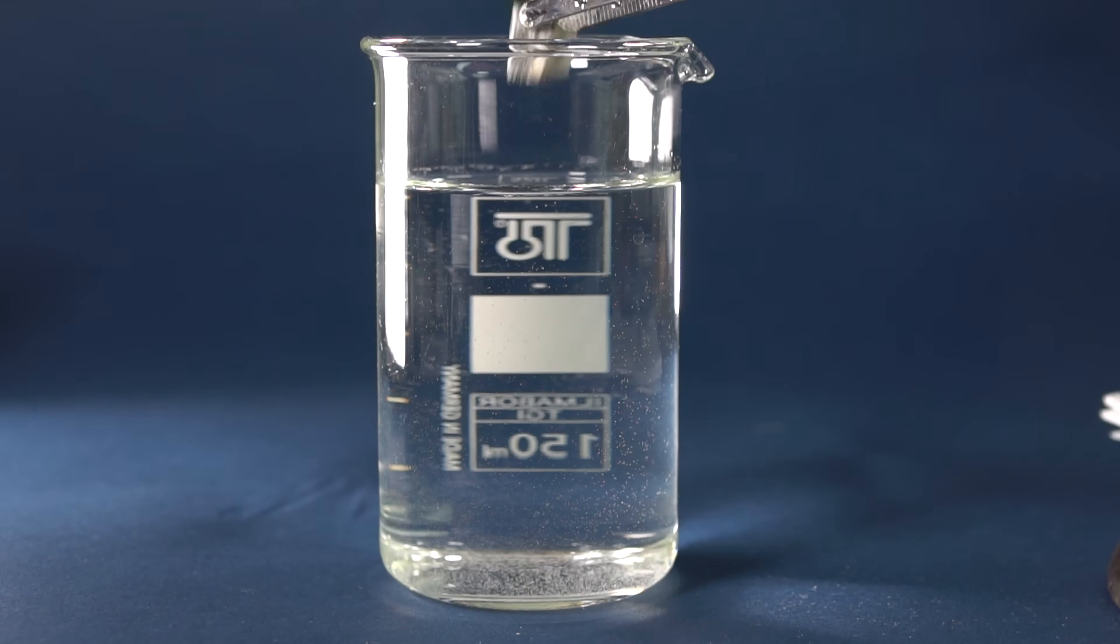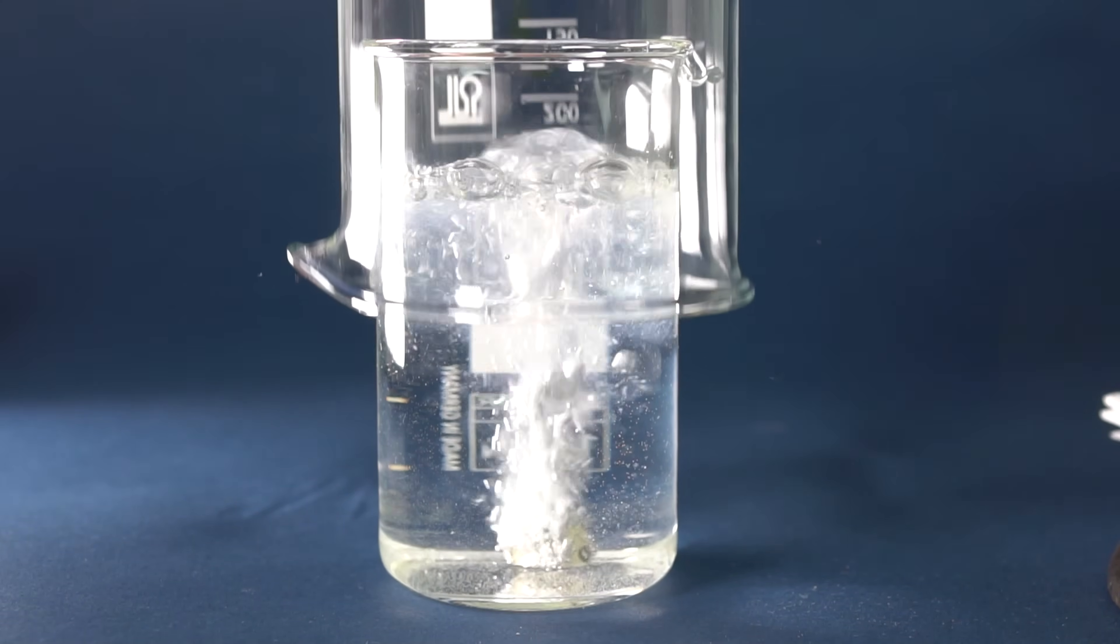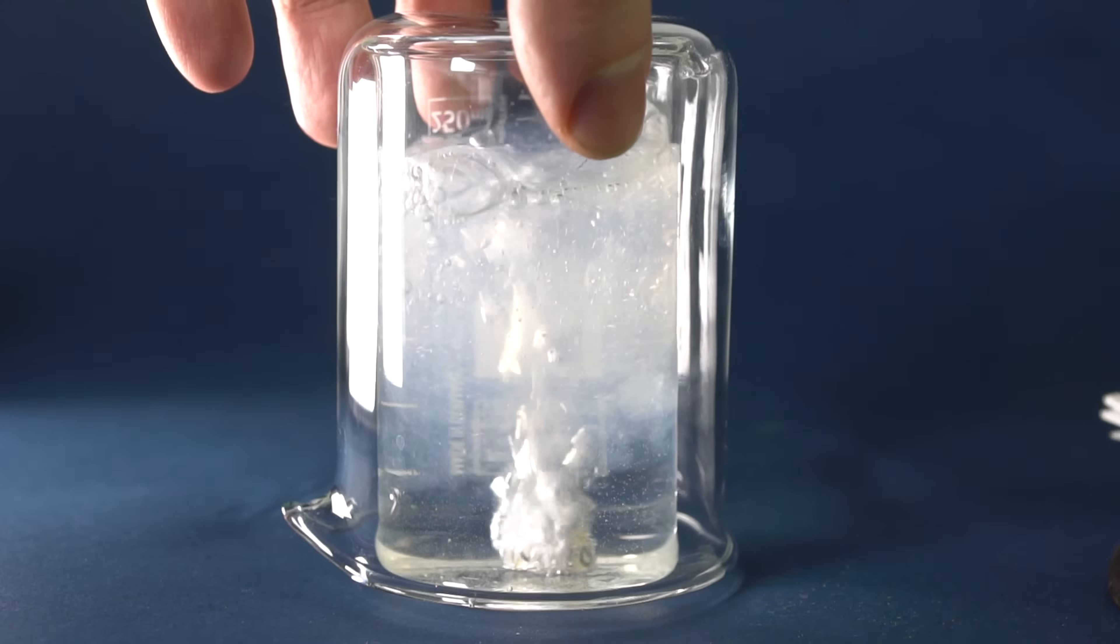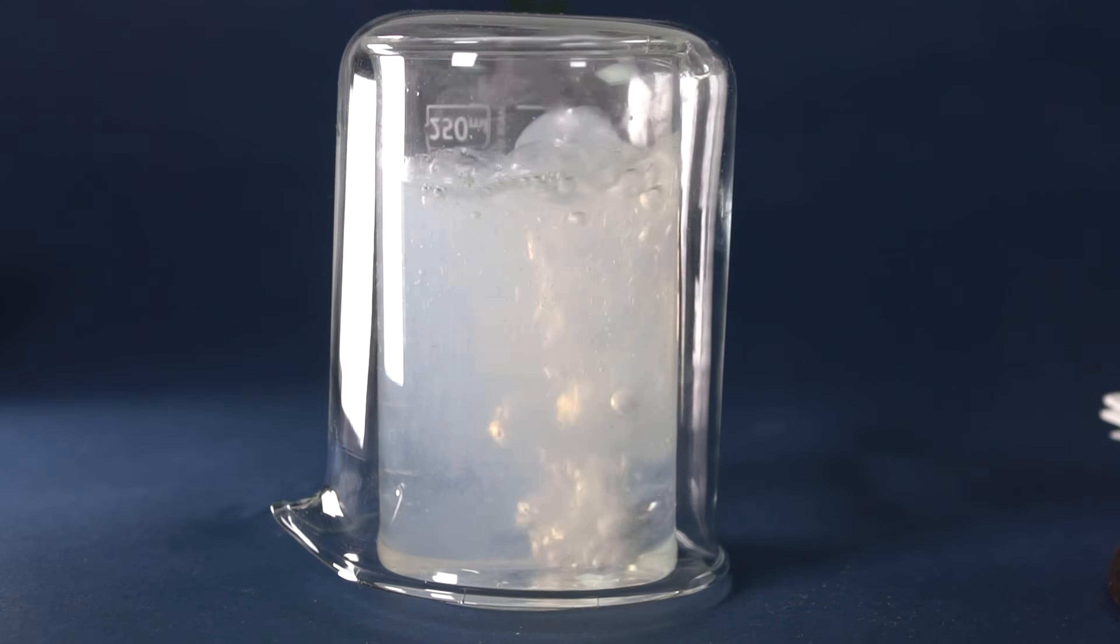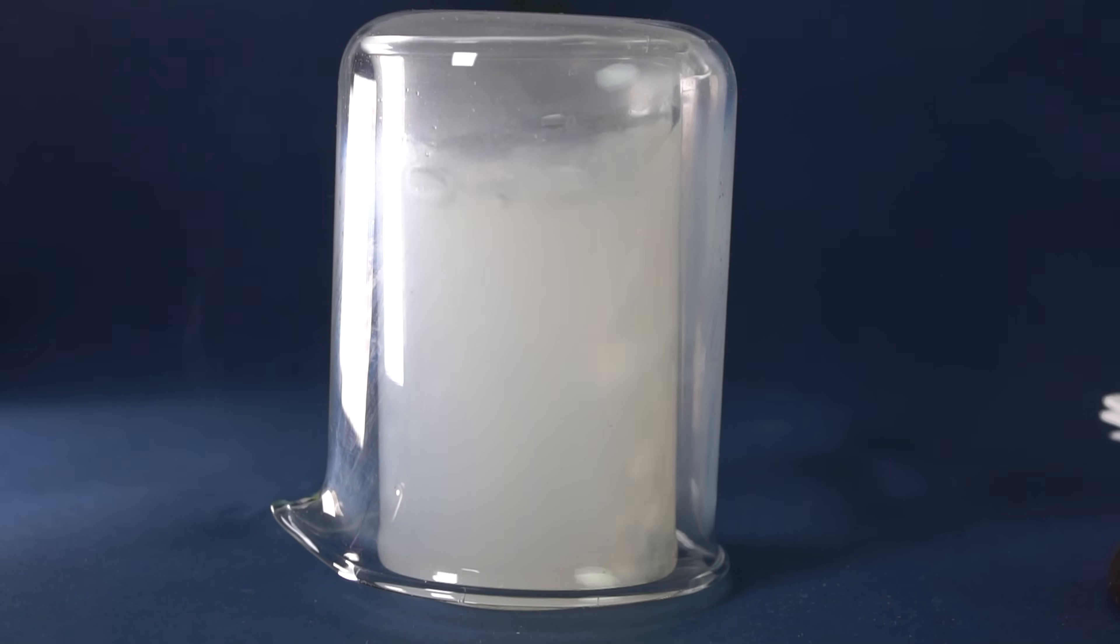With water, barium reacts even more vigorously, releasing large quantities of hydrogen, also forming during this reaction barium hydroxide. This compound is only slightly soluble in water and hence the solution becomes turbid.